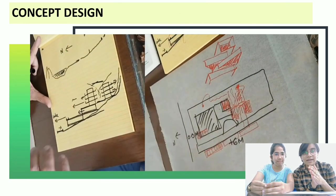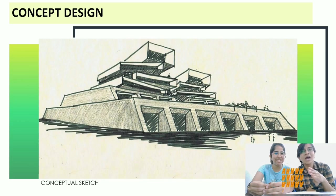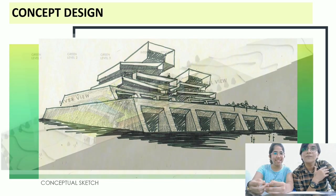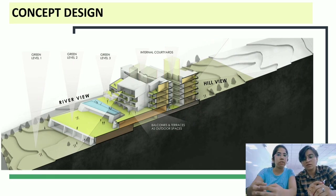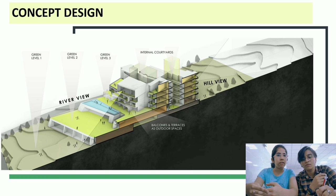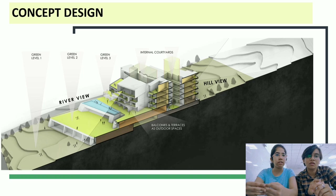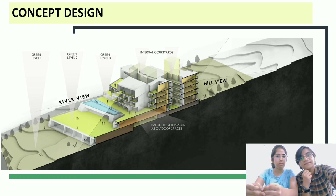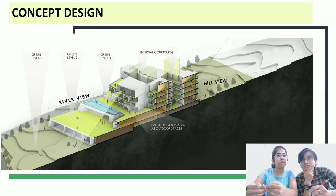Now comes the concept design. The whole concept is based upon the section. We have a banquet in the front and the lower section with the river view. At a level of 6 meters above in the hilly contours, we have the bell rooms, which are naturally ventilated with internal courtyards. Each room has balconies and terraces as outdoor spaces.